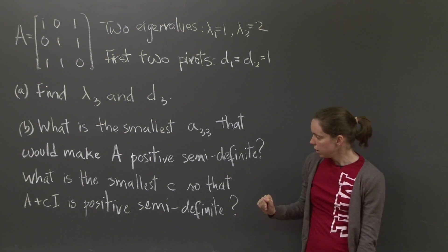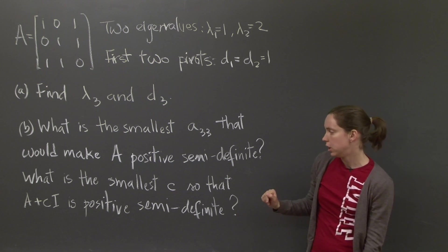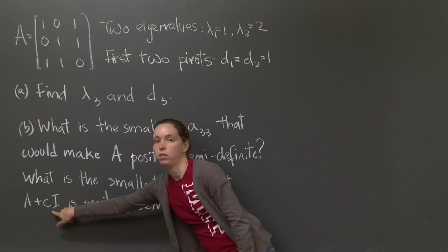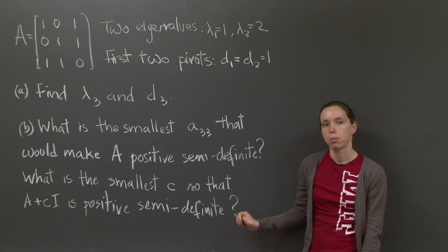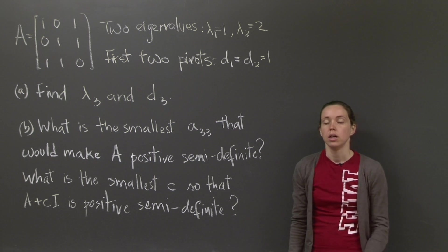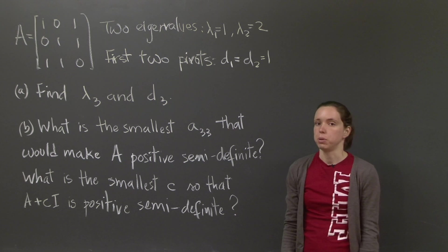And also, if instead of changing that entry, you do A plus c I, what is the smallest number c that will make that matrix A plus c I positive semi-definite? There's also a third part to the question, but we'll get to that later.